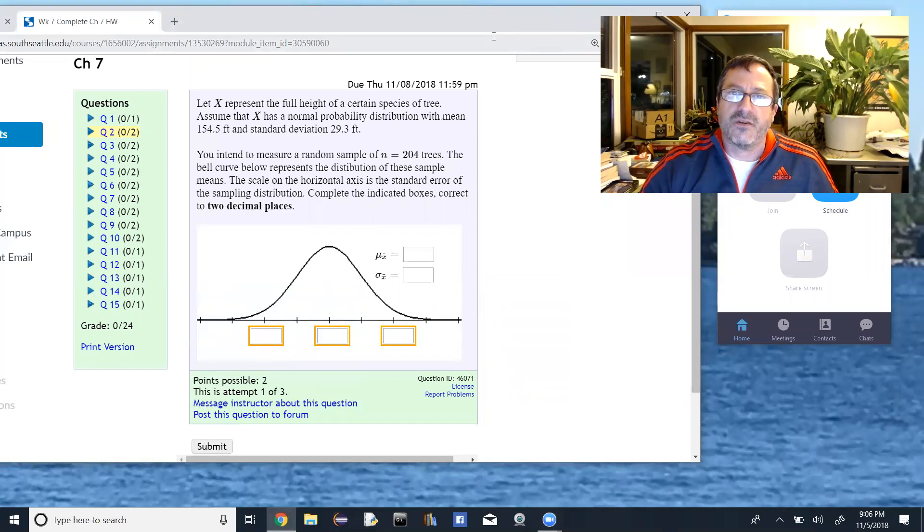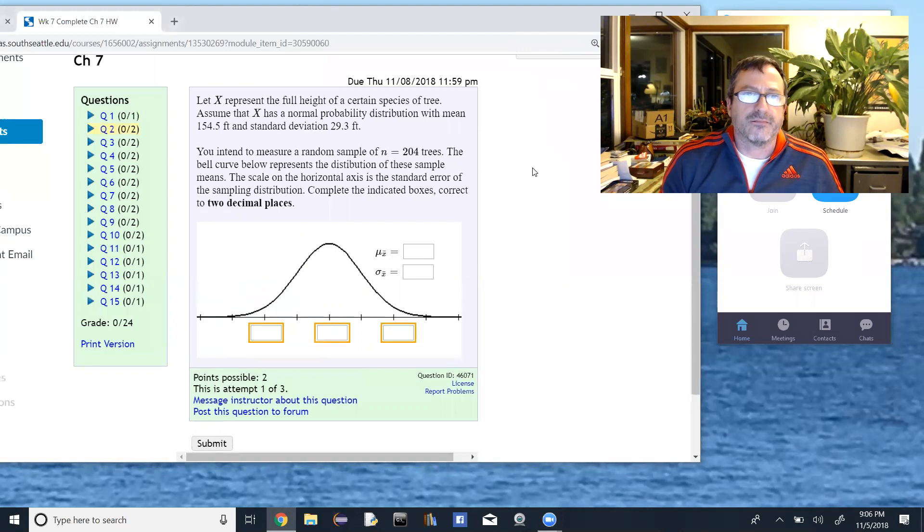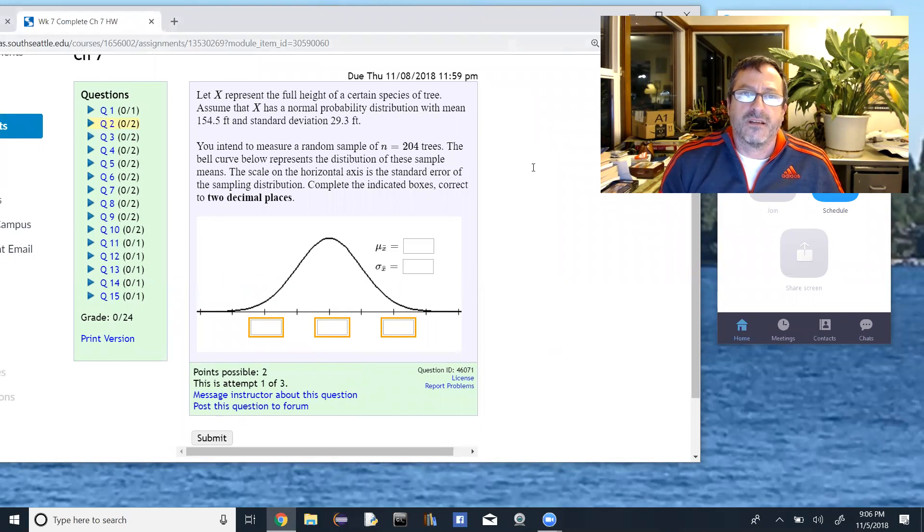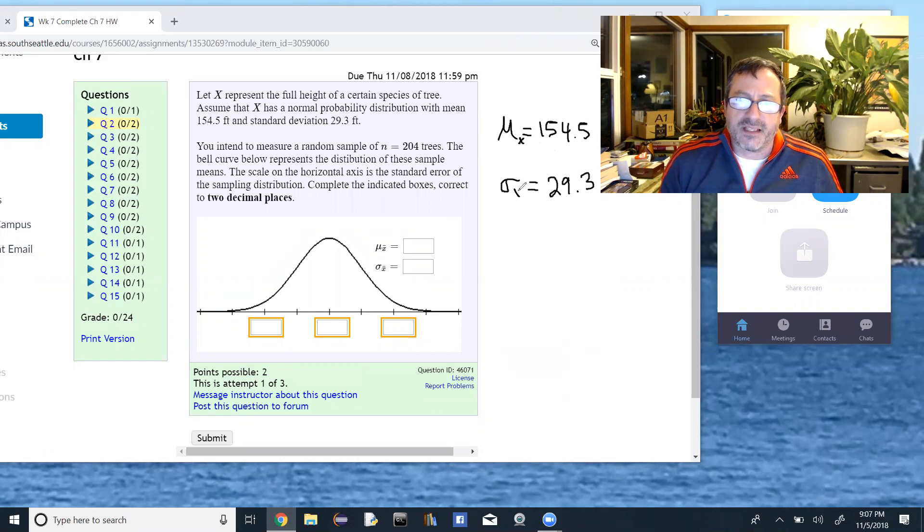So from that, we know some things about X. What do those represent? So the mean mu equals 154.5 and the standard deviation sigma equals 29.3. And these are the mean and the standard deviation for the random variable X. So because we're in chapter 7, we're going to be looking at two different random variables, both X and X bar. I'm going to put a subscript on these, mu sub X for the mean and sigma sub X for the standard deviation.